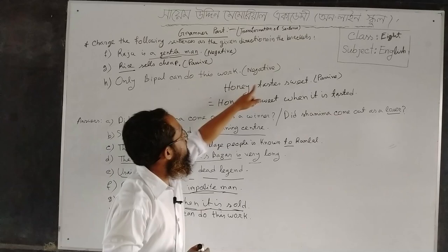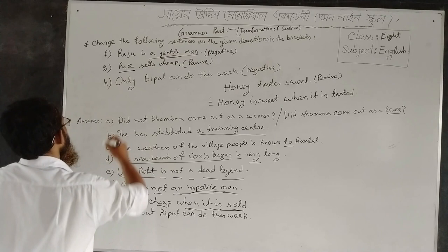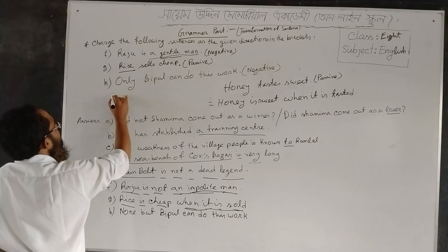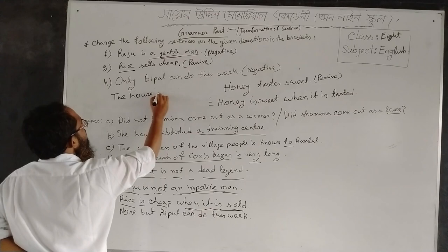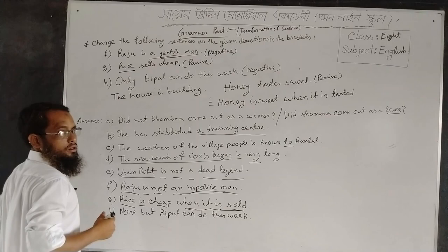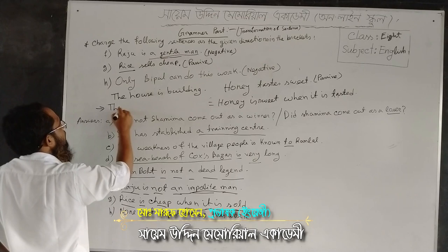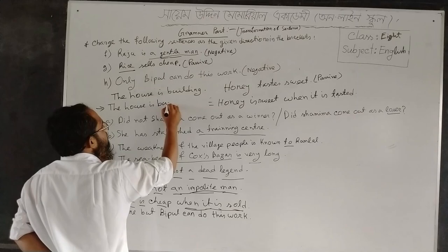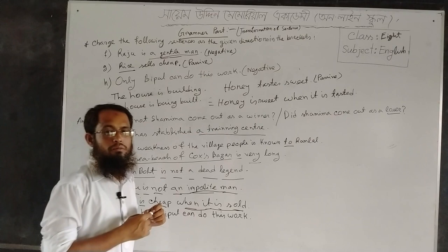Likewise, honey tastes sweet → Honey is sweet when it is tasted. You can learn more sentences like this. For example: The house is building — using the same rule, you change it to: The house is being built. These are quasi-passive sentences because quasi-passive verbs are used.